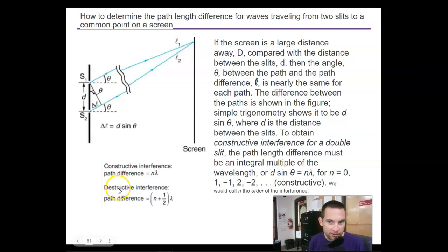To determine the path difference for waves traveling from two slits to a common point on a screen, if the screen is a large distance away, bigger than the distance between the slits (little d), then the angle theta and the path L is nearly the same for each. The difference in the figure, simple trigonometry shows it to be d sine theta.